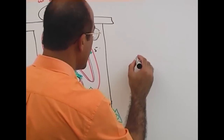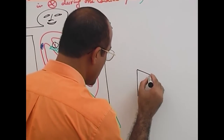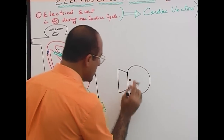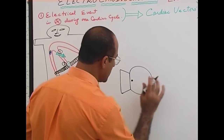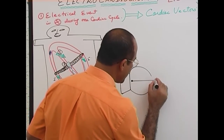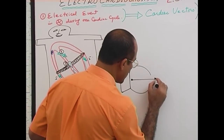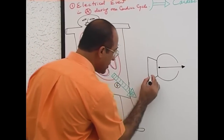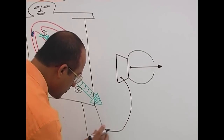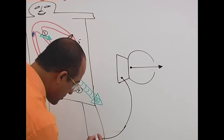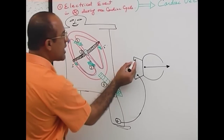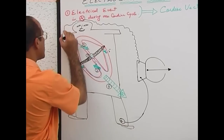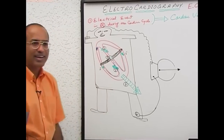Now, let's suppose that here is our galvanometer and we break down its window and take its needle out. This is that galvanometer. We apply, let's suppose, a positive electrode on the left foot, and we apply the negative electrode on the right arm.